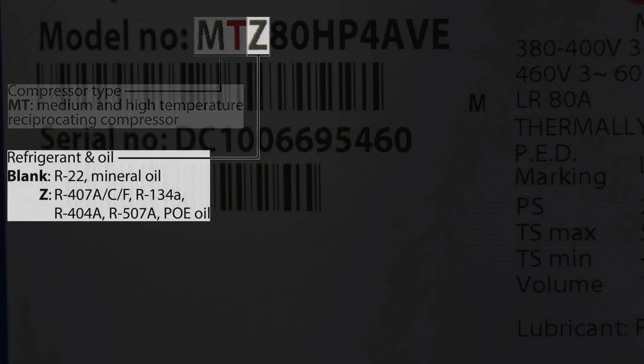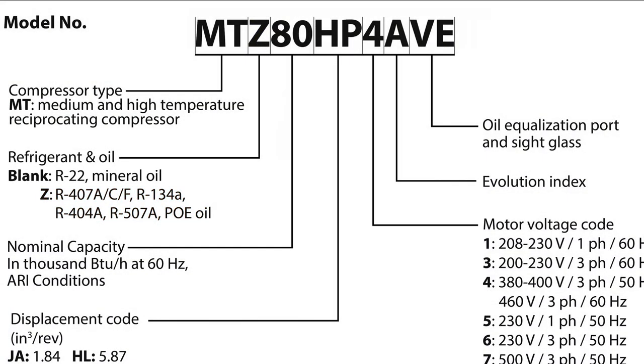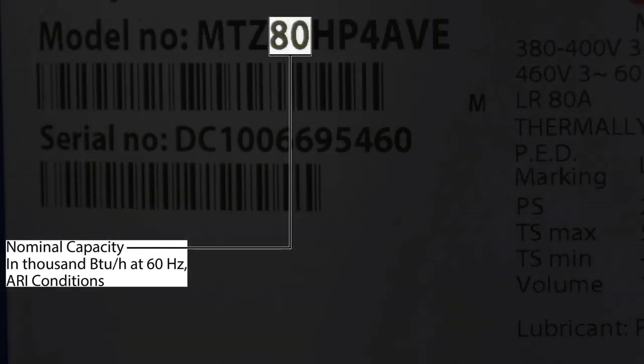The third digit signifies the oil and refrigerant. If the digit is skipped, the oil used is mineral oil with R22. If a Z is used, the oil used is POE oil with R407A, C, or F, R134A, R404A, and R507A. The next two to three digits of the model number signify the nominal capacity of the compressor in thousands of BTUs per hour.